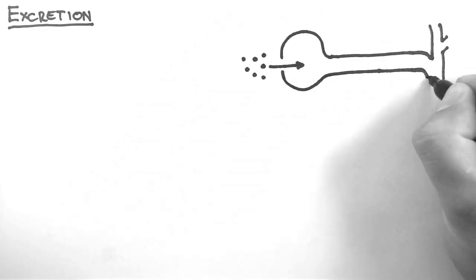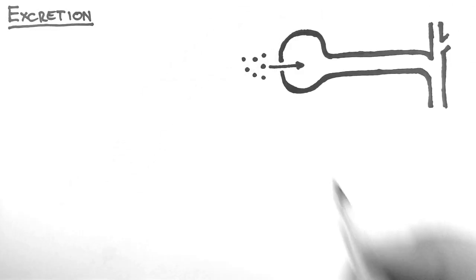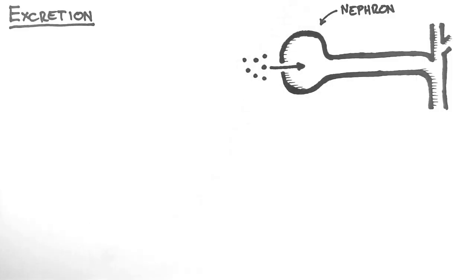In this system of excretion, a drug gets filtered into the nephron of the kidney. If you want more information on the details of this, check out the nephron function tutorial and other kidney tutorials at handwritten tutorials.com.